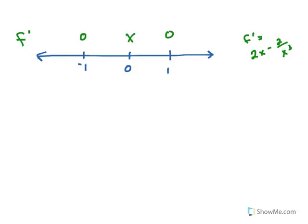We want to substitute into our derivative. If we start by picking something less than negative 1, like negative 2 or negative 3, and substitute into the derivative, we get a negative answer. If we choose an x value in between negative 1 and 0 and substitute into the derivative, we get a positive. Try these on your own to make sure you understand why it's either positive or negative. Substituting something in between 0 and 1, perhaps one-half, we get a negative there. And then something larger than 1, we get a positive. The sign of the derivative tells us what's going on with the original function, so the original function is decreasing, then increasing, then decreasing, then increasing.